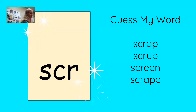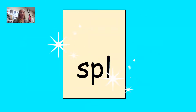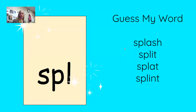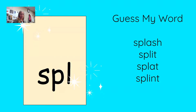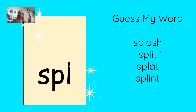Let's play again with a new blend. Erase your board. Our new blend is 'spl.' Let's take a look at our words: splash, splint, splat. Number your whiteboard one, two, three, four. I'm going to write my secret word on my board. Write a word on line number one. If I go too fast, just pause — you're going to write and read the words.